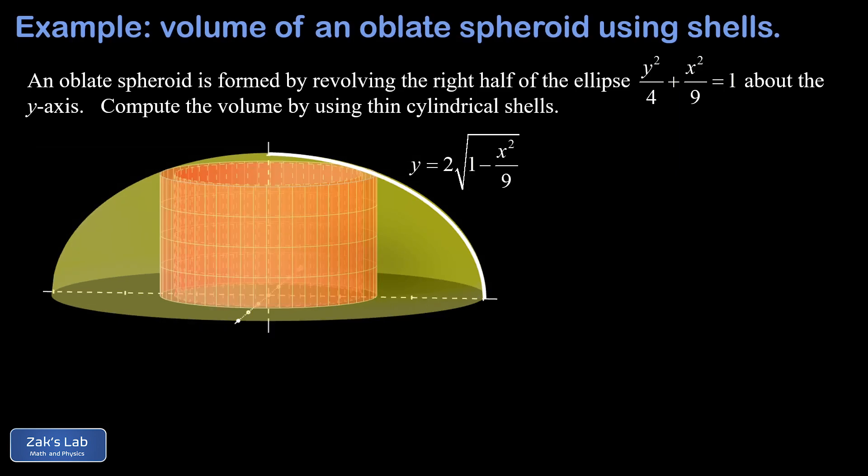The next thing we need to do is figure out the dimensions of this shell, and we start with the radius which we're going to call x. That goes from 0 to 3 as we nest our shells to fill the entire ellipsoid from the center out to the edge.